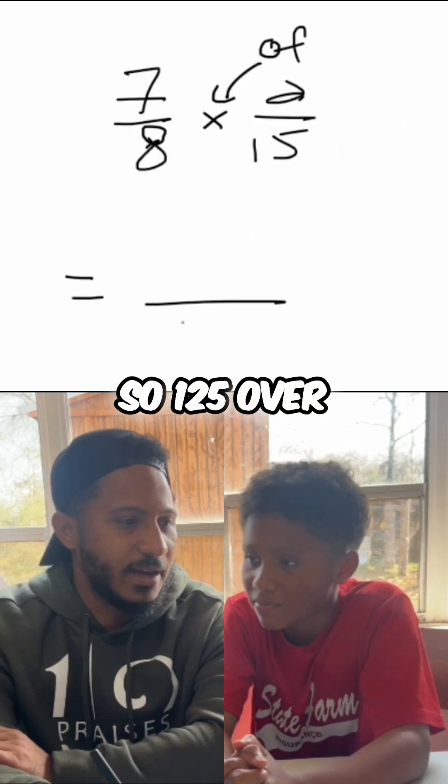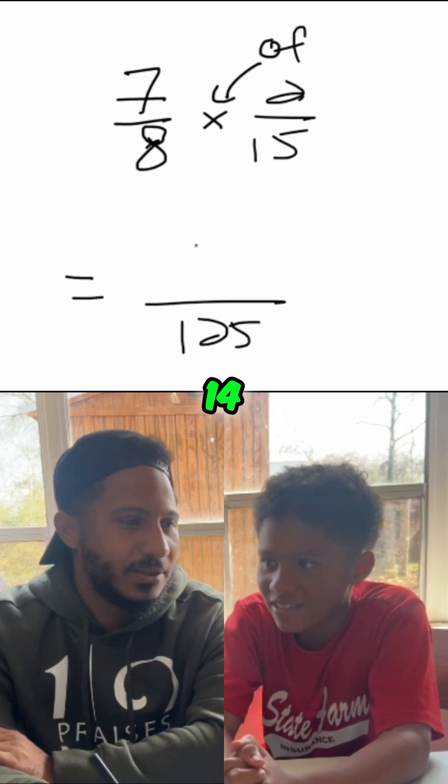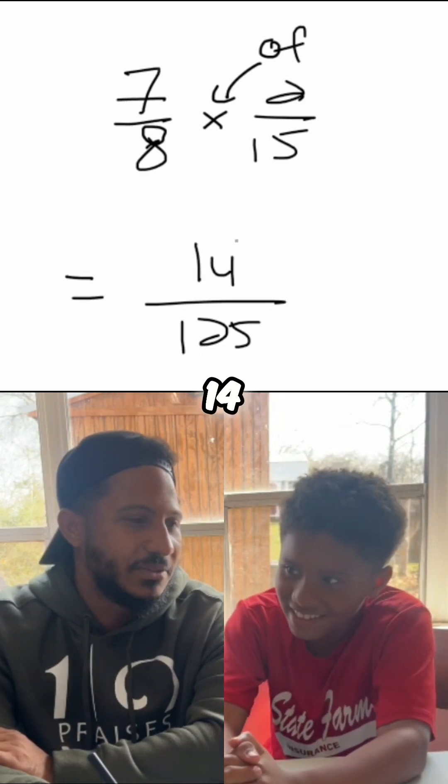Okay. So, one twenty-five over. I'm sorry, one twenty-five. And then, what's the numerator? Fourteen. Fourteen. Seven times two is fourteen. Seven times two is fourteen.